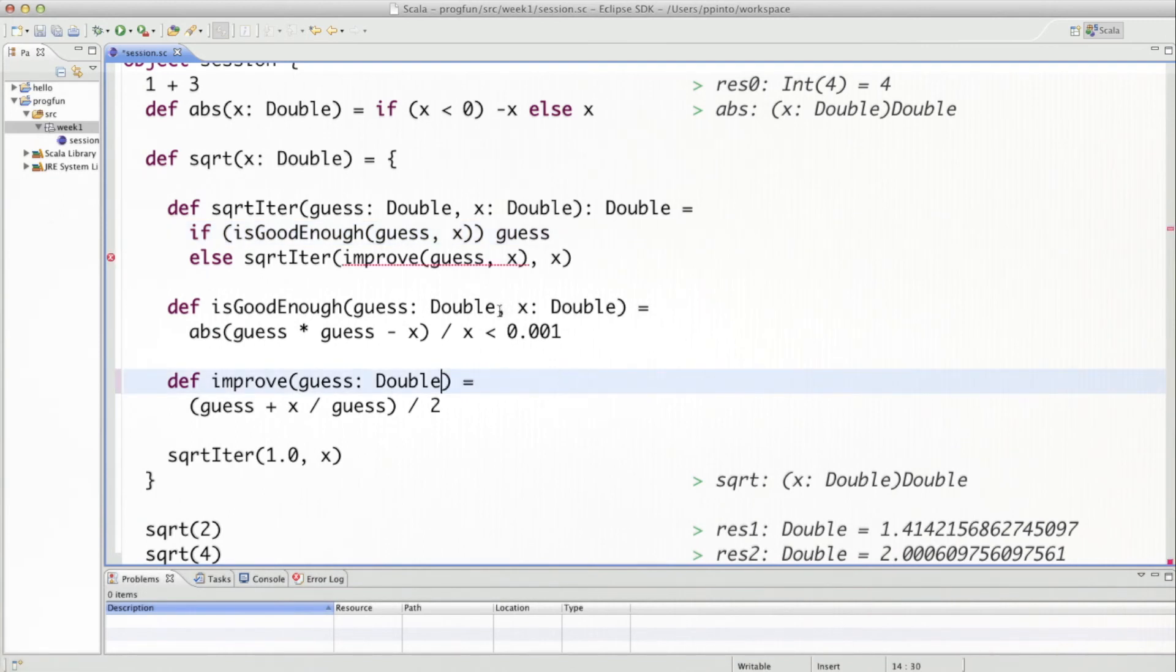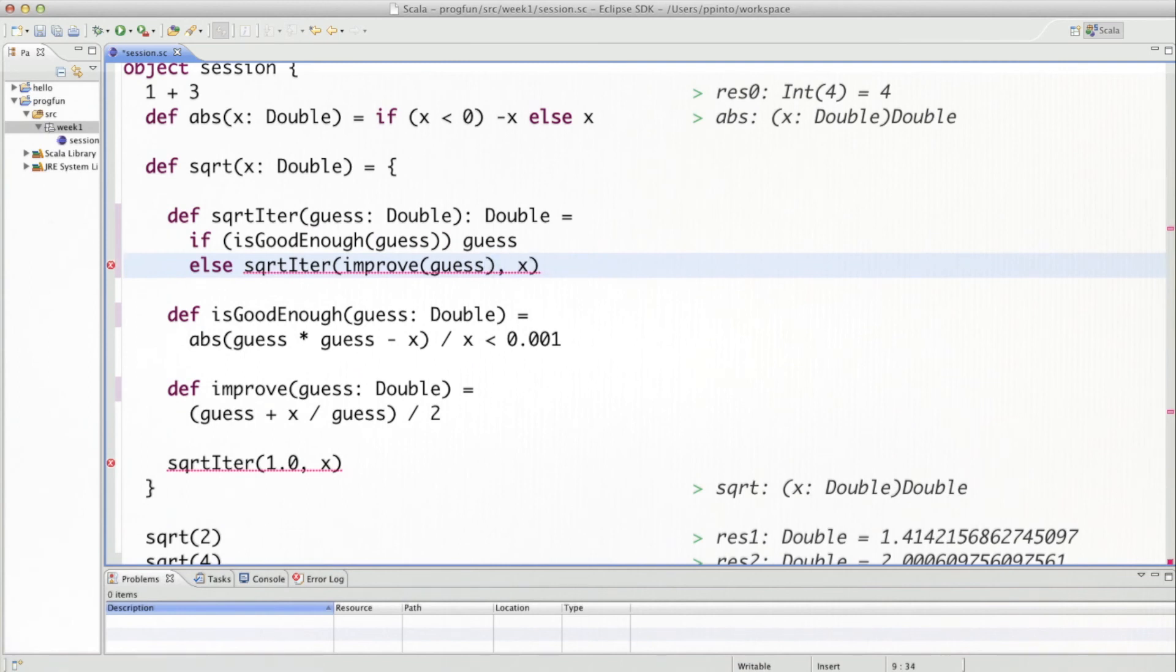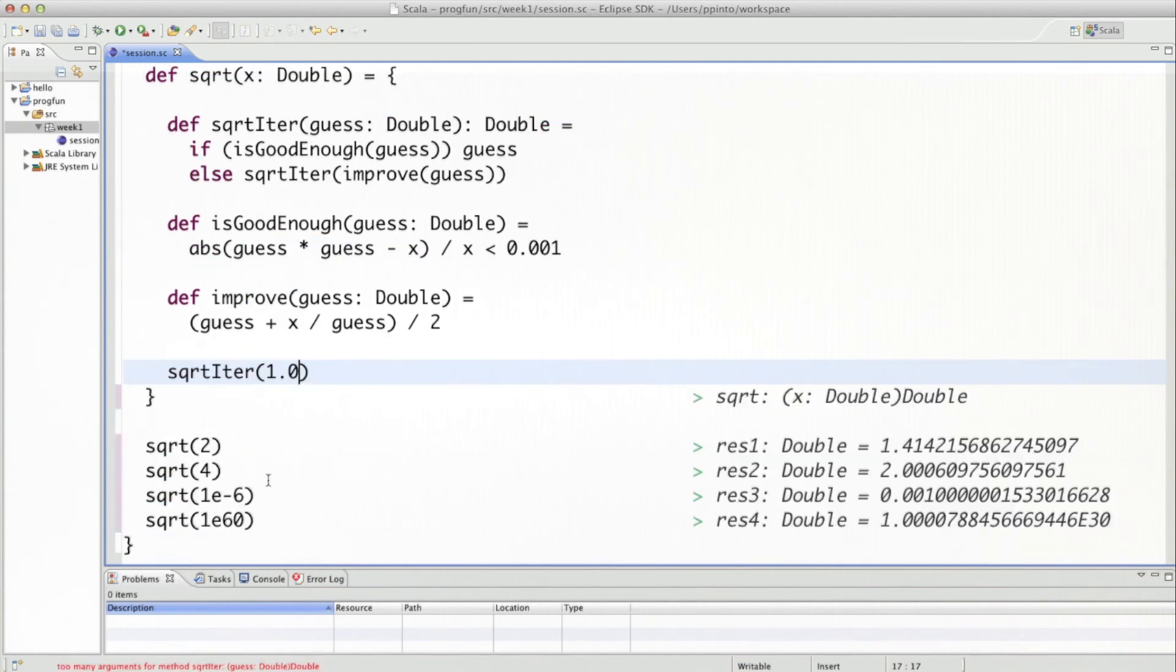And eliminate the corresponding parameter in the application. And we have the same version of square root.